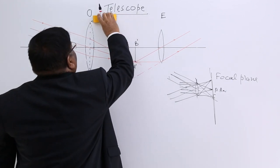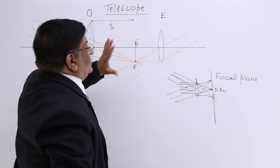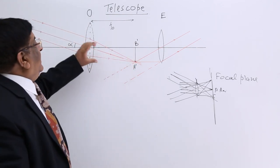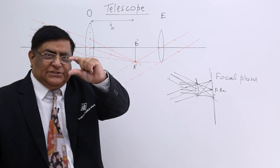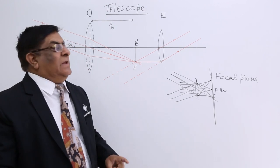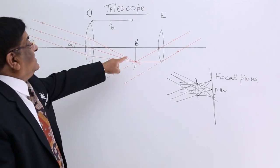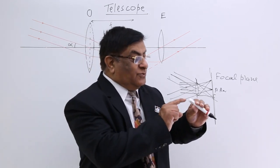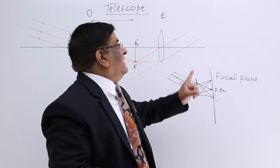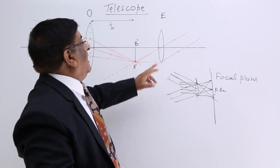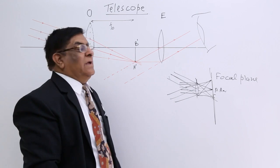After the objective lens forms the image, we get a small image with the help of that convex lens. This image is quite short and we want to magnify it further. The objective lens creates the image, and to study it larger, we use a simple microscope — a magnifying glass — placed here, and we put our eyes there to see the image magnified.